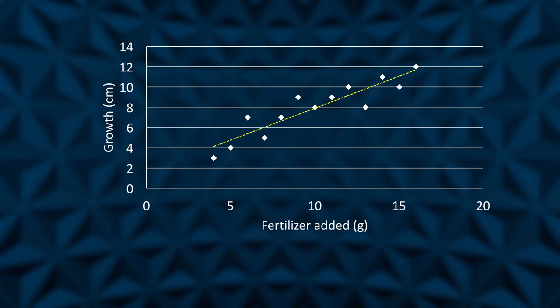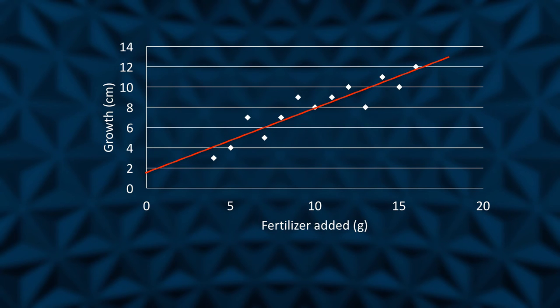A line of best fit can often be drawn to indicate a correlation. We often see a line of best fit in scatter plots extended or extrapolated beyond the data range to make predictions.